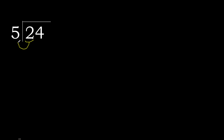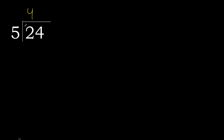24 divided by 5. 2 is less, therefore next. 4. 24. 24 is not less, therefore with 24. 5 multiplied by which number is nearest to 24 but not greater? 5 multiplied by 5 is 25, which is greater. 5 multiplied by 4 is 20, which is not greater. 24 minus 20 is 4.